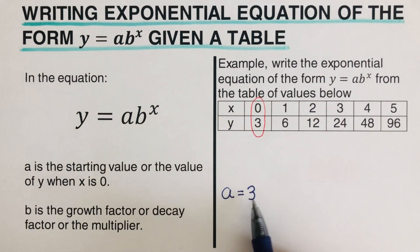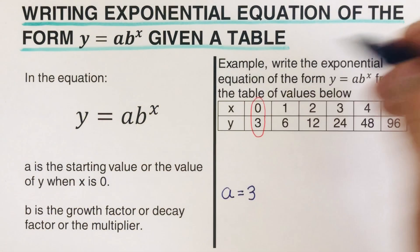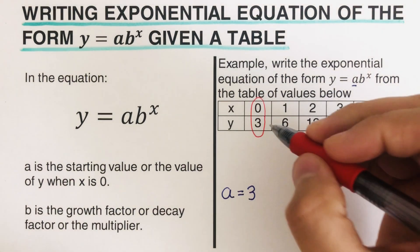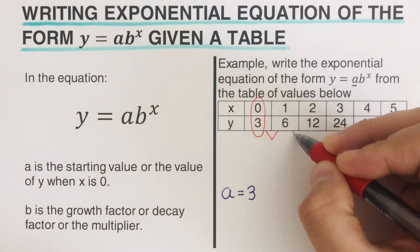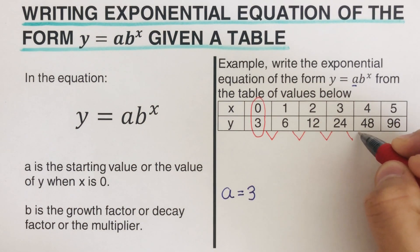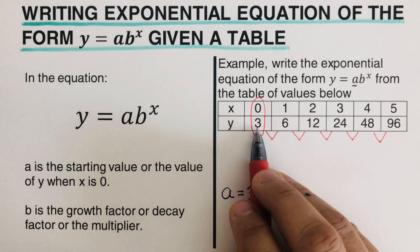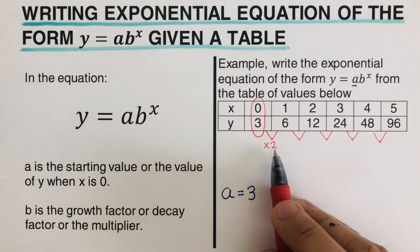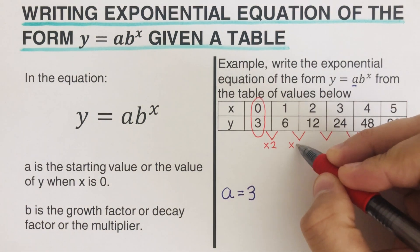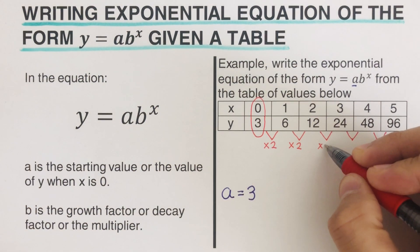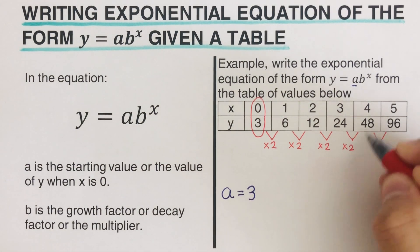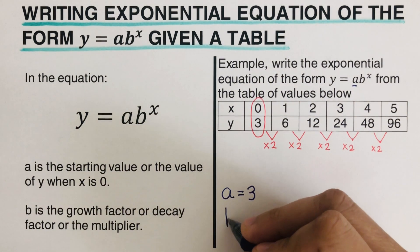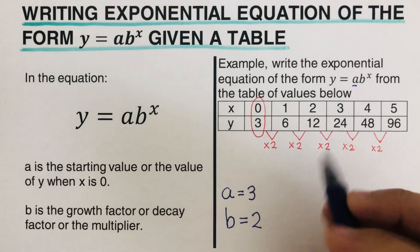A is the value of y when x is 0. Now we will look for the b. The b is the multiplier. In this problem, what number do we multiply each time in order to get the next value? From 3, what number do we multiply to make it a 6? That would be times 2. So 6 times 2 is 12, 12 times 2 is 24, 24 times 2 is 48, 48 times 2 is 96. So our b, which is the multiplier, is 2 in this problem.